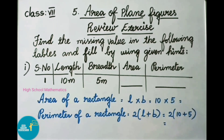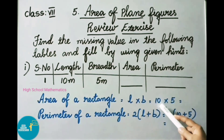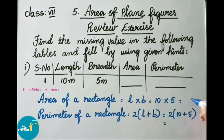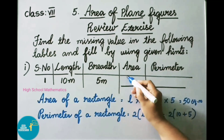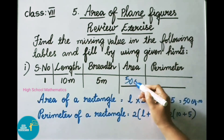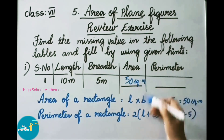We know the area of a rectangle formula: length into breadth, that is L × B. So that equals 10 meters into 5 meters, which gives 50 square meters. Therefore, the area here is 50 square meters.